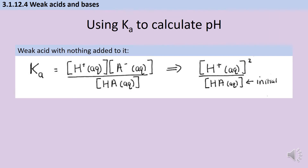Before using Ka to calculate pH, we make two key assumptions. The first: for a pure weak acid that hasn't reacted with a base or been neutralized, the concentration of hydrogen ions and the anions will be equal, since they've both come from one acid particle splitting apart. So rather than having both in the expression, we can simplify and use hydrogen ions squared. Remember, this only works for a weak acid that hasn't reacted with anything else.